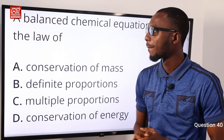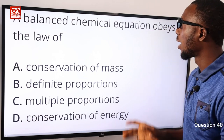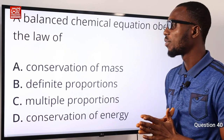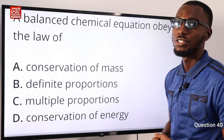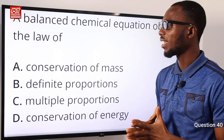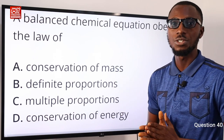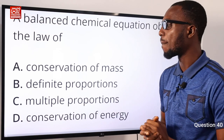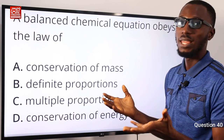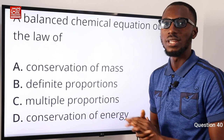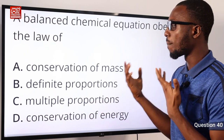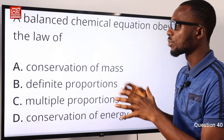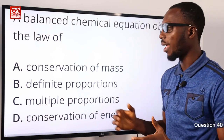Question 40. A balanced chemical equation obeys the law of conservation of mass. In a chemical reaction, there is neither a gain nor a loss in mass — the mass of the products equals the mass of the reactants. The correct option is A.